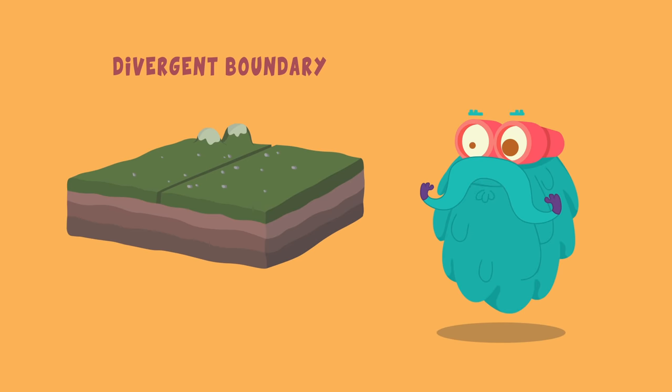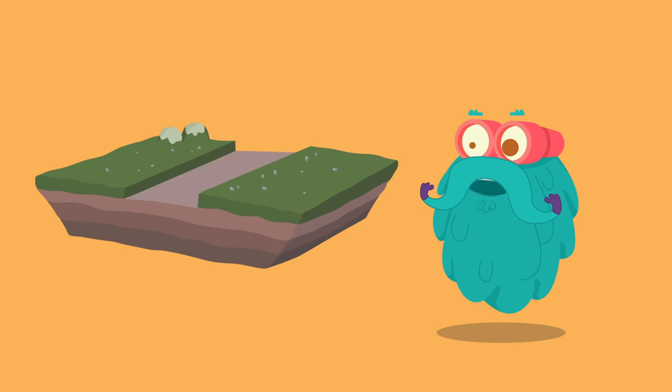Divergent boundary: Here, plates are drifted apart from each other, forming a rift zone. This kind gives birth to new ocean floors.